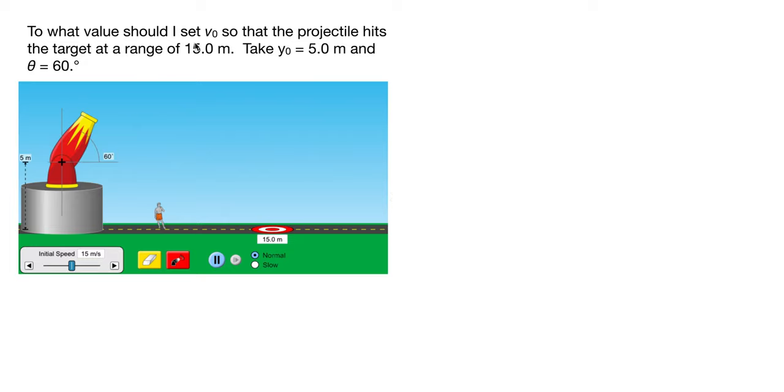Hi everyone. I wanted to cover this problem that I didn't reach in class today, which asks what value should I set V0 to so that this projectile hits the target at a range of 15 meters.